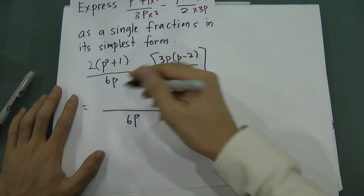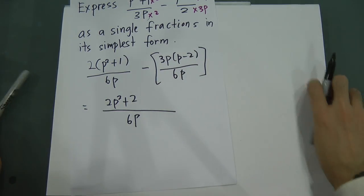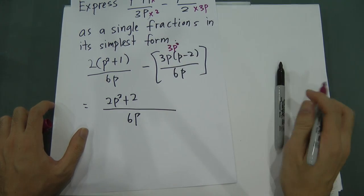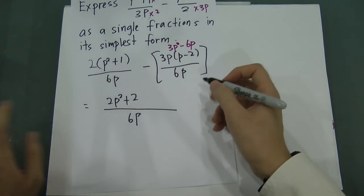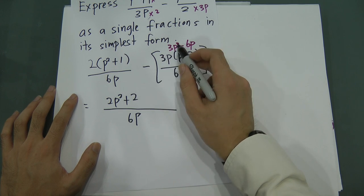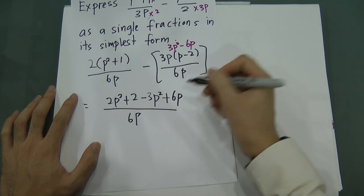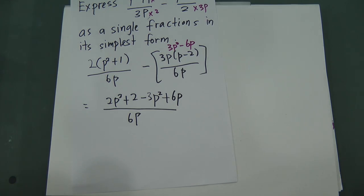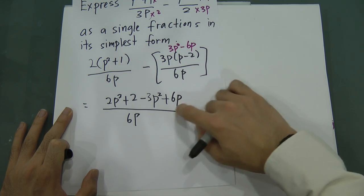Writing it with denominator 6p: 2 times p-squared gives 2p-squared, and 2 times positive 1 gives plus 2. For the second numerator, 3p times p gives 3p-squared, and 3p times negative 2 gives negative 6p. Remember the negative must be distributed to both terms, so we get minus 3p-squared minus negative 6p.